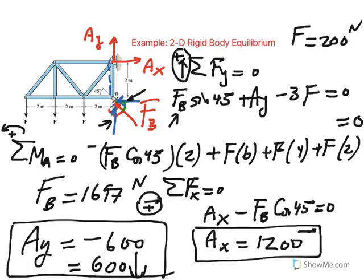So with three equations and three unknowns, we determined the reaction at the roller and the reactions at the pin — Ax and Ay.